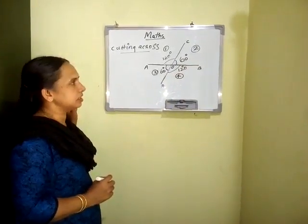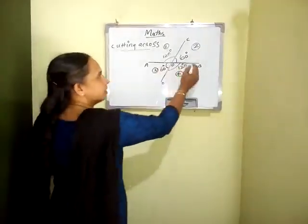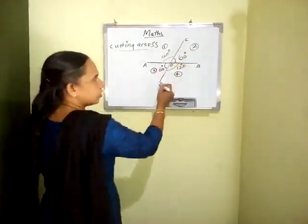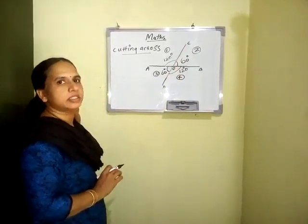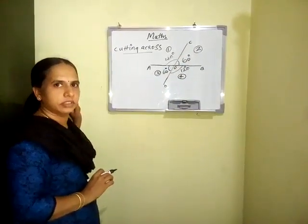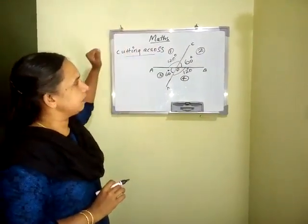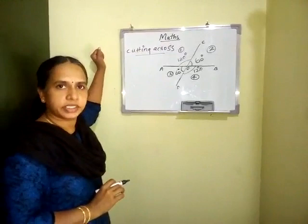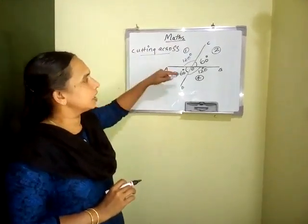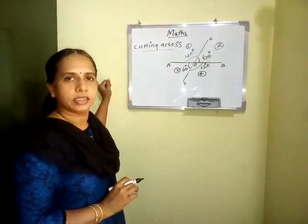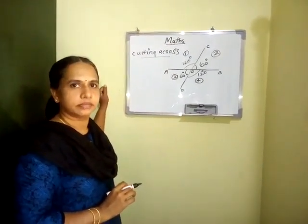From this, we can see that when two lines cut across each other, four angles are formed. The nearby angles make 180 degrees, and the opposite angles formed are equal. Understood?